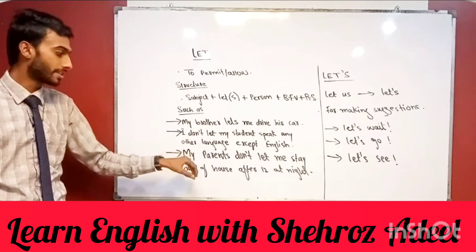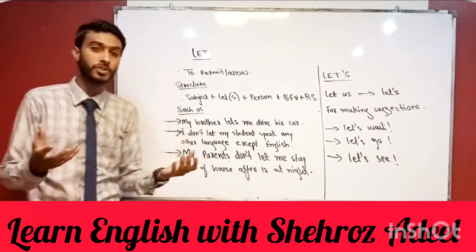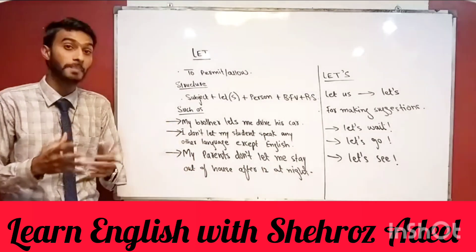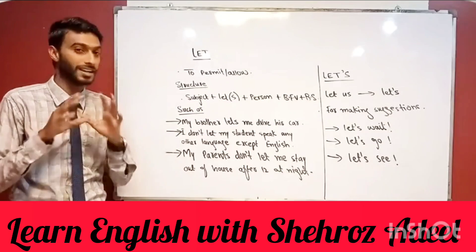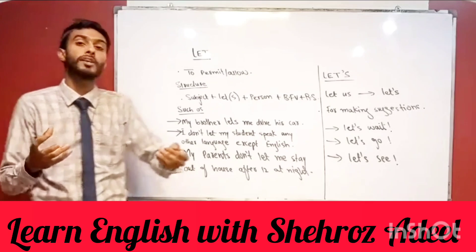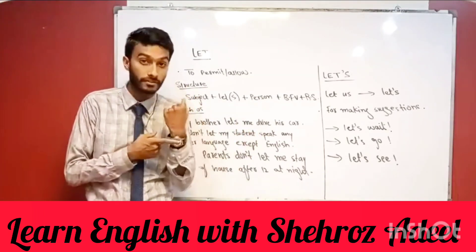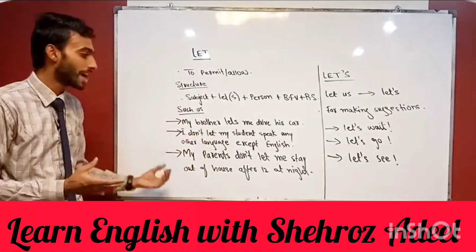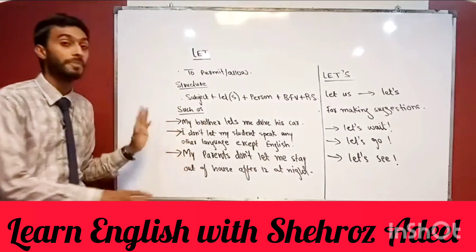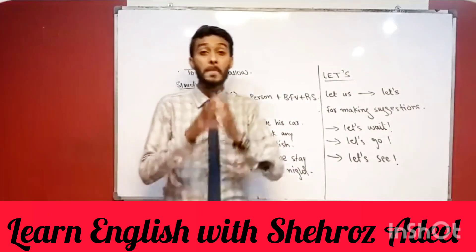Third example: 'My parents don't let me stay out of the house after 12 at night.' Most parents are very worried about their kids, and mine especially so. I'm talking about my parents who do not allow me to stay out with friends after midnight. So: 'My parents don't let me stay out of the house after 12 at night.' Now there is a second part which people find most difficult.